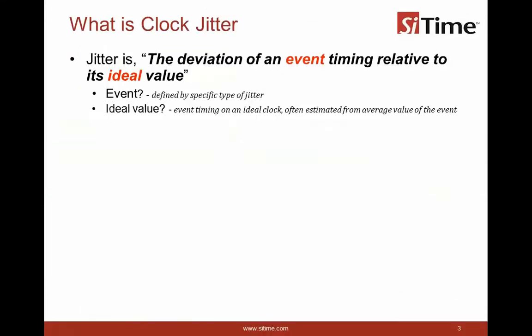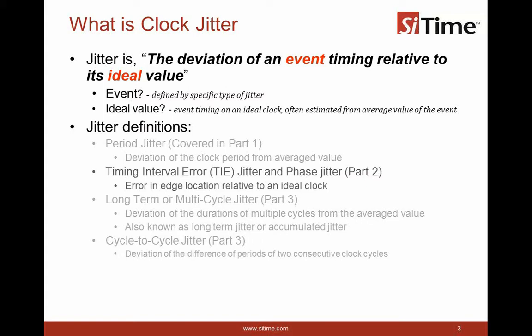Sure. I talked about period jitter and defined jitter as a variation of an event in the signal relative to its ideal value. This time, we're going to focus on variation of an edge relative to its ideal location in time, and that is what is referred to as time interval error, and it's also indicated by the noise in the phase of the signal, hence its relation to phase noise.